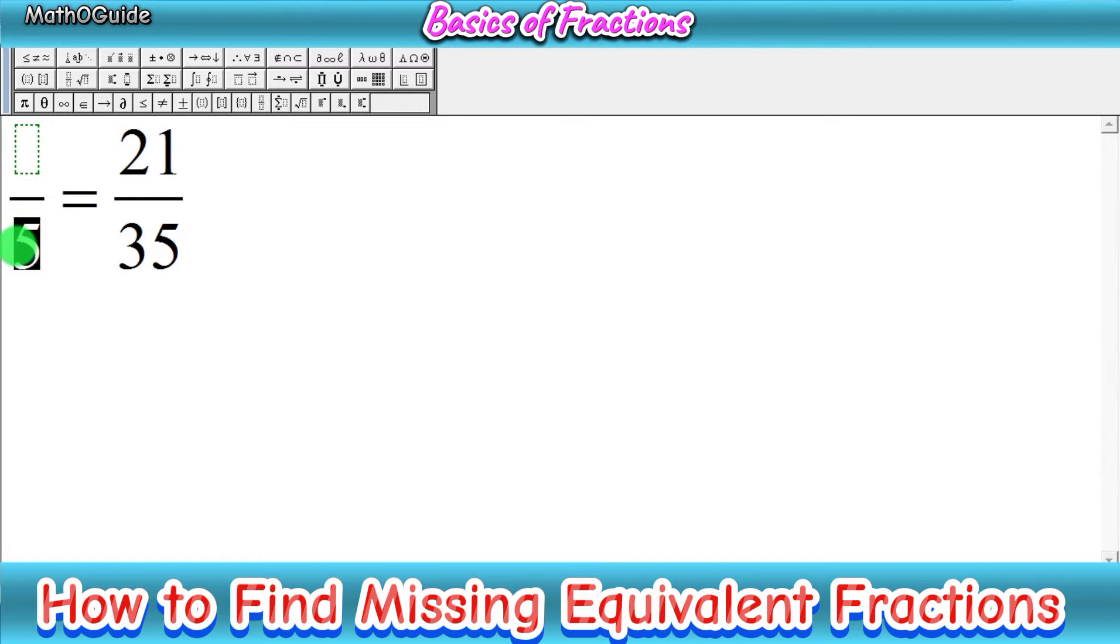We have the complete fraction 21 over 35, so we have to divide this fraction with some number. Simply we have to divide 35 by some number to get 5.